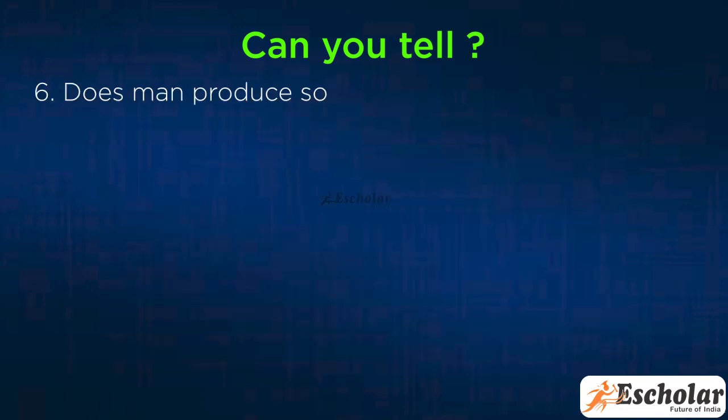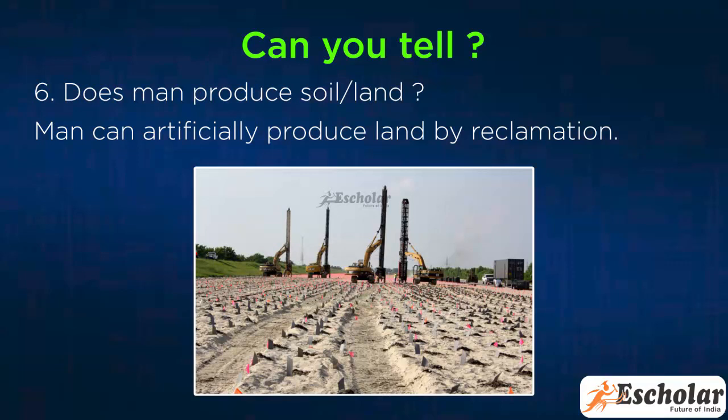Sixth, does man produce soil or land? Man can artificially produce land by reclamation.